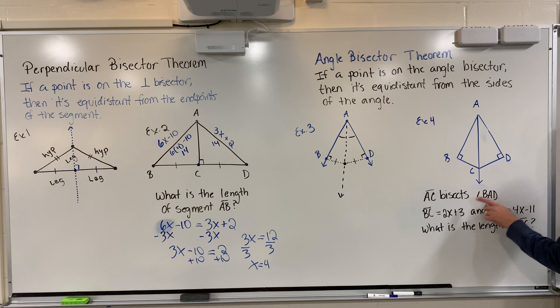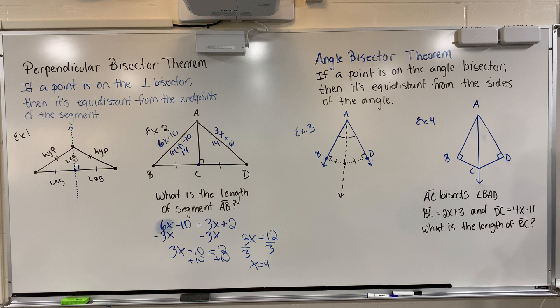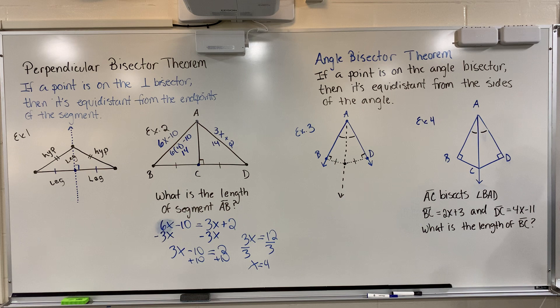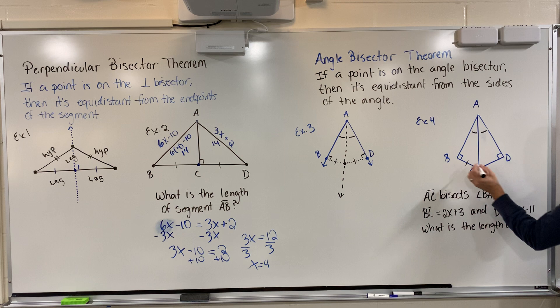In this one, number four, it says AC bisects BAD. That means that AC, this segment, bisects angle BAD. So right away, I now know that these are congruent. But I also know that when you bisect an angle, that means that these just became congruent as well.